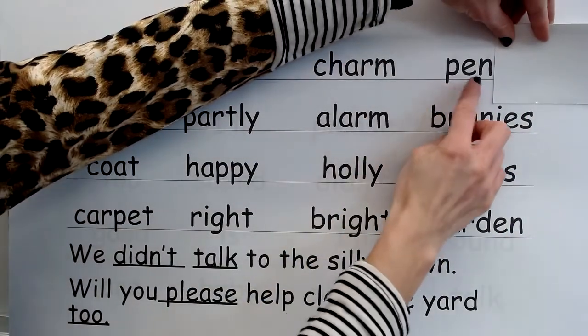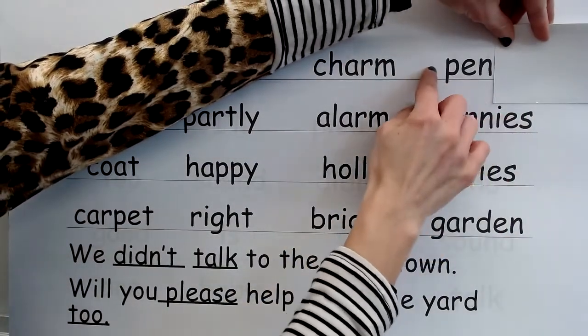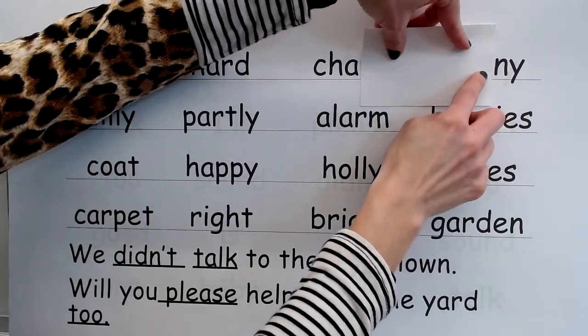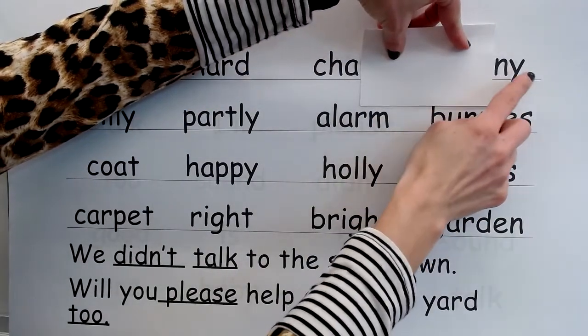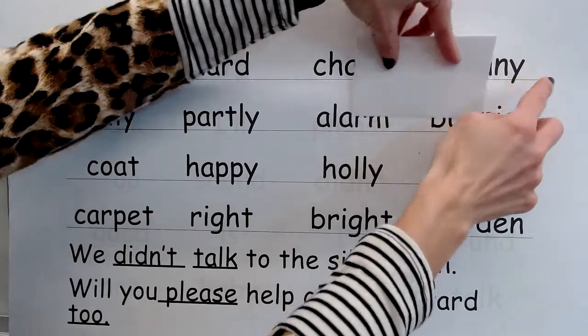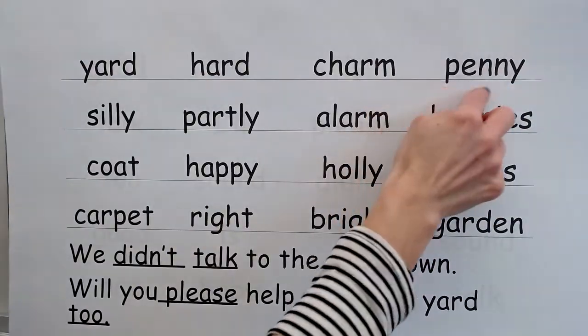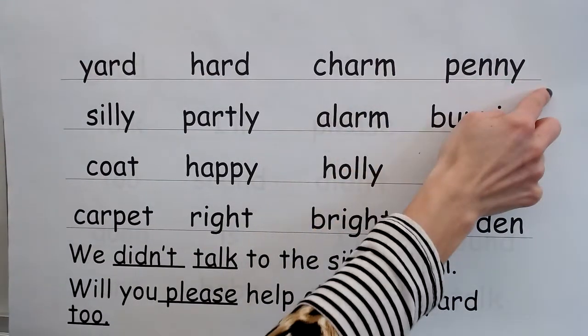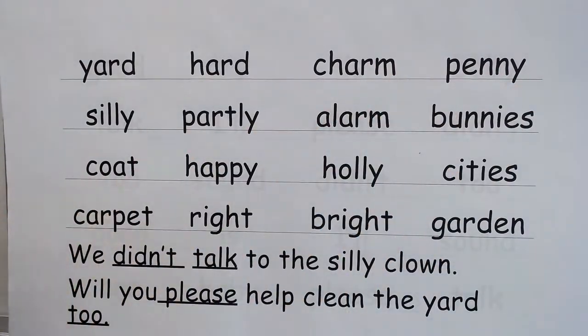Sound — Eh; syllable — pen. Second syllable: sound — E, syllable — knee. Blend — penny; word — penny. Yes, penny.